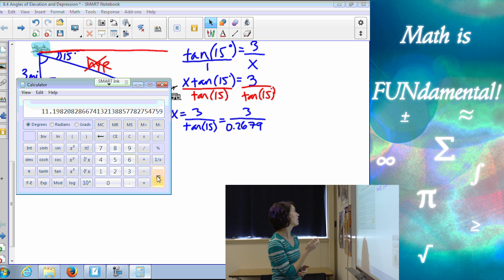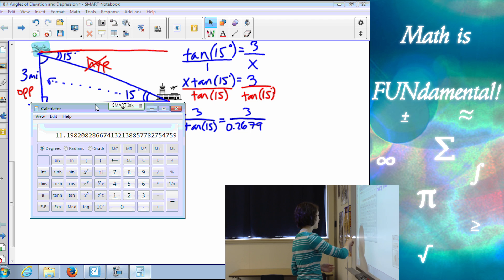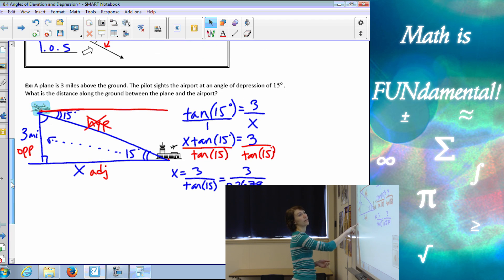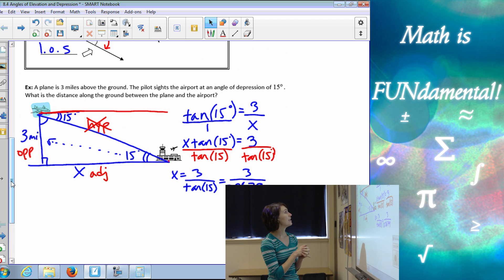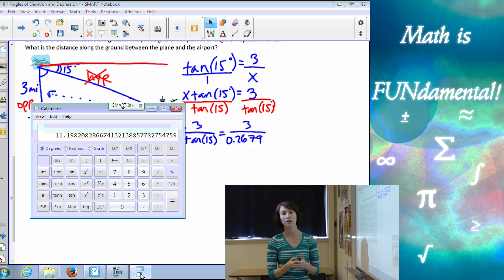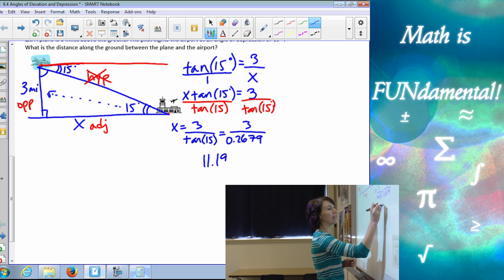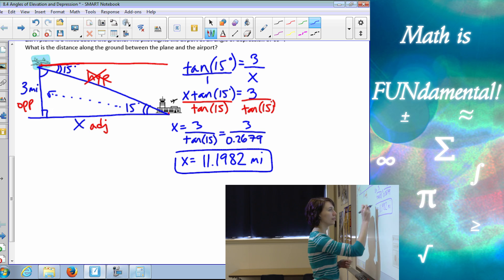We have 11.198. The problem said, how many decimals do we want? It usually tells us. It doesn't in this case. So you know what? Better safe than sorry. I'm going to use 3 or 4 decimals. I like 4 decimals if it doesn't specify. So, 11.1982. And we are in miles. All right.